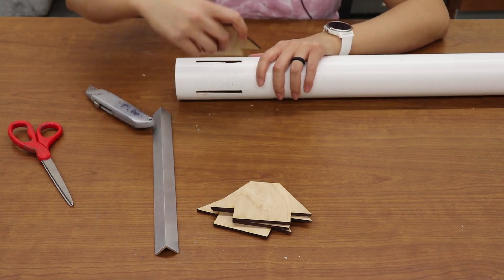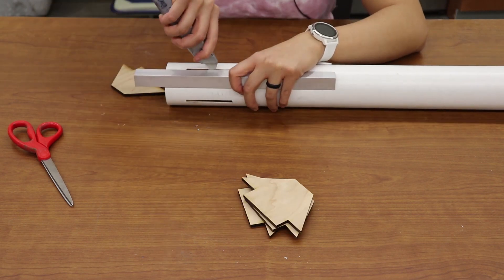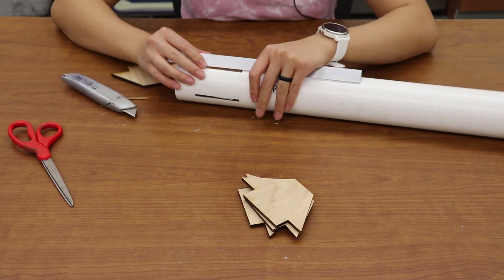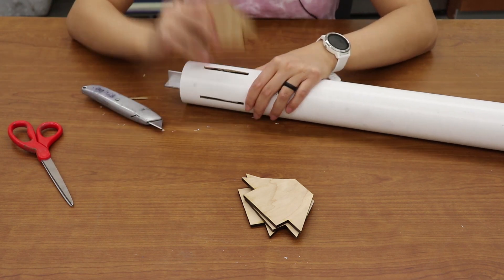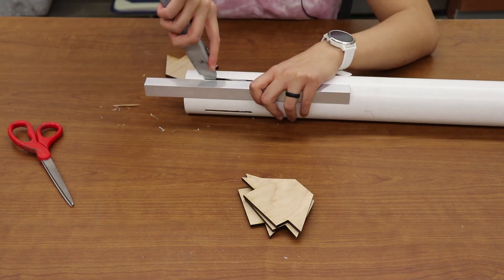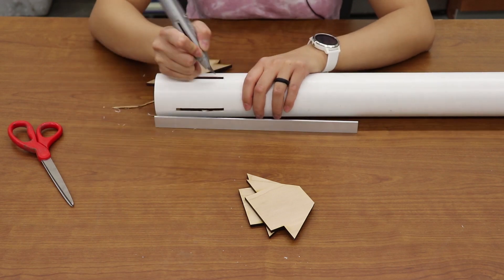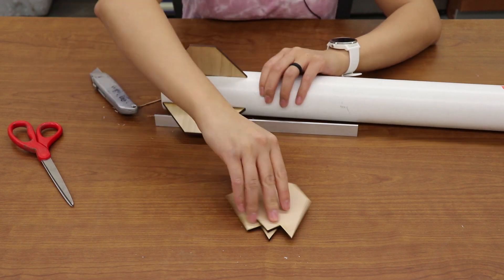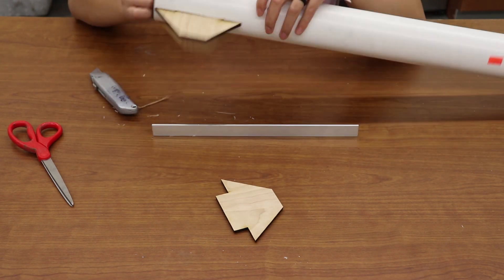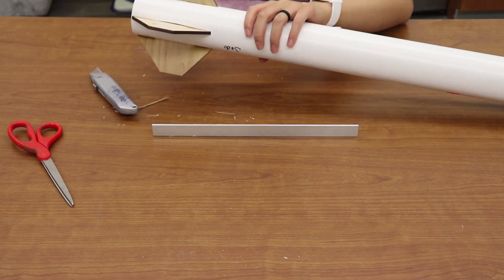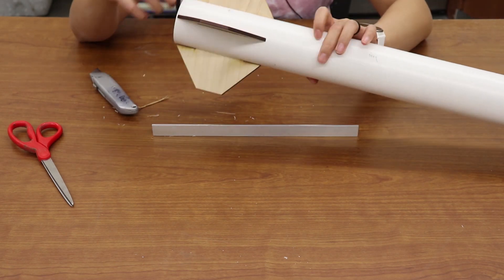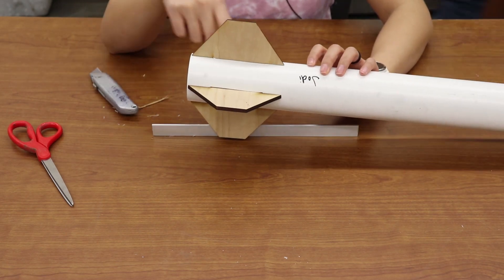So now that I'm going through each fin slot, I'm going to continuously check and make sure the fin will fit. Now that I've corrected all the fin slots, I'm going to put in my fins to see what it looks like. And all the fins work and it's starting to look like a rocket. Perfect.